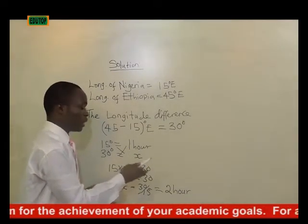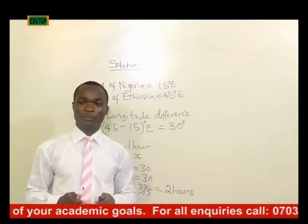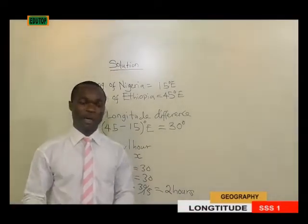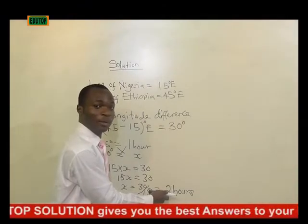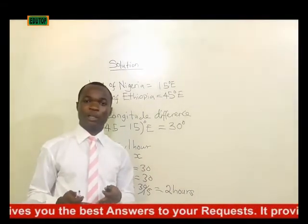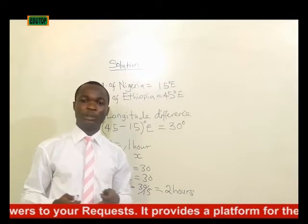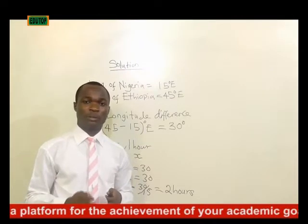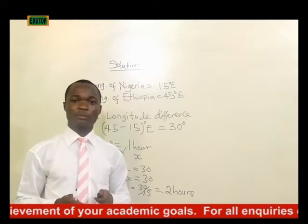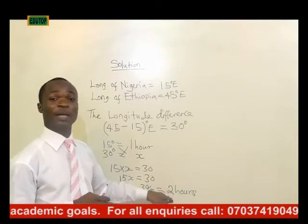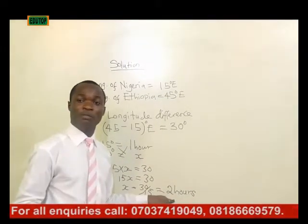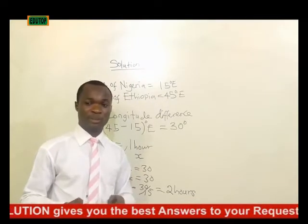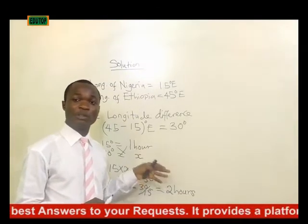Note that if after carrying out these mathematical operations you have a remainder — in this case we have a whole number with no remainder — but if you do have a remainder after the division, what you do is multiply the remainder by four minutes to get the appropriate time conversion.